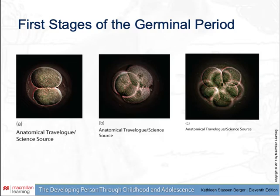The first stages of the germinal period show the original zygote dividing into two cells, four cells, and eight cells. Occasionally at this early stage the cells separate completely, forming the beginning of monozygotic twins, quadruplets, or octuplets.